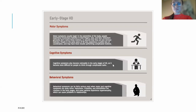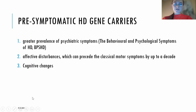Already at early stages of Huntington's disease there are not only subtle motor symptoms but also subtle neuropsychiatric changes, for example cognitive or behavioral symptoms. In presymptomatic HD gene carriers, there is a greater prevalence of psychiatric symptoms denominated as behavioral and psychological symptoms of HD (BPSHD). These are normally affective disturbances which can precede the classical motor symptoms by even a decade.